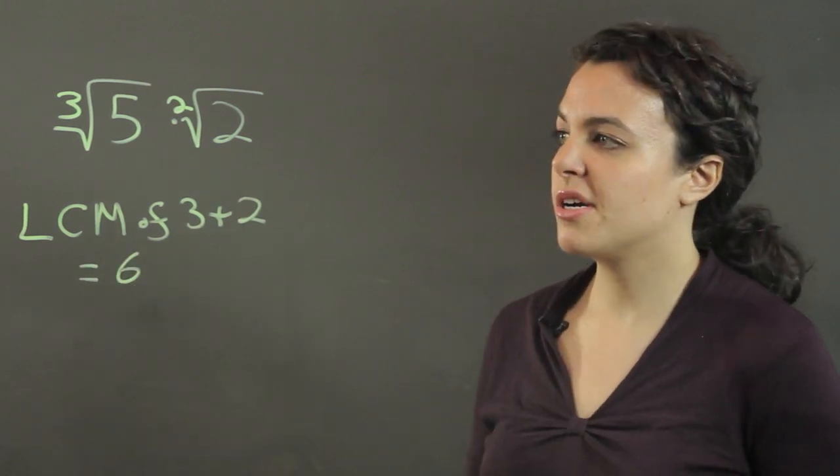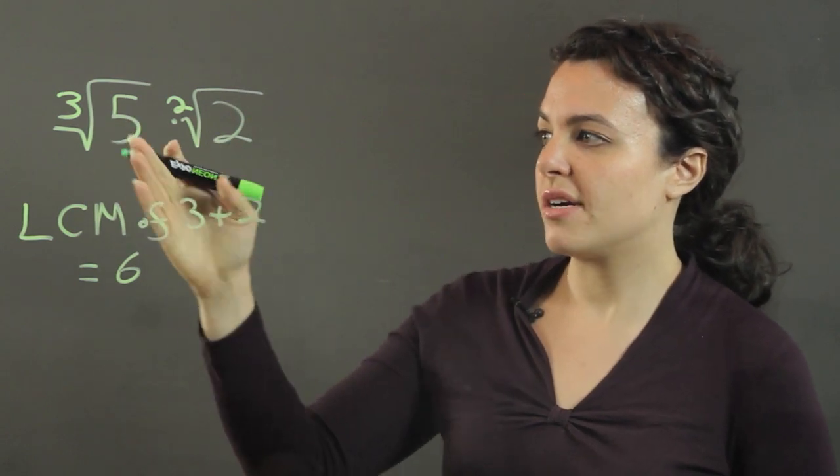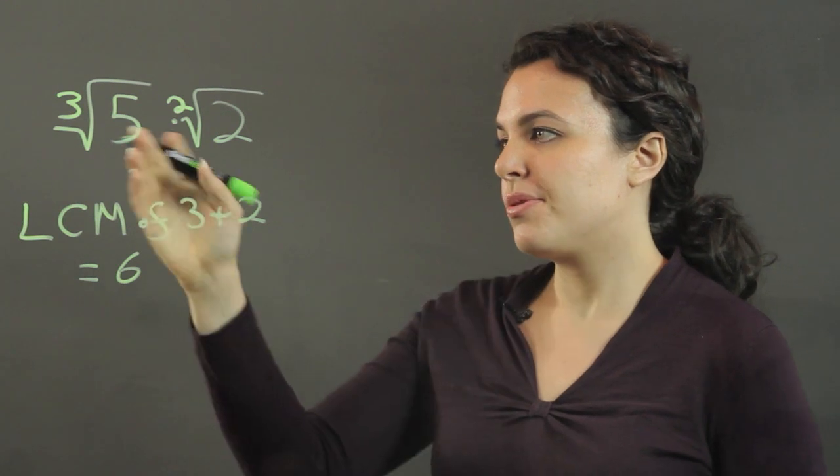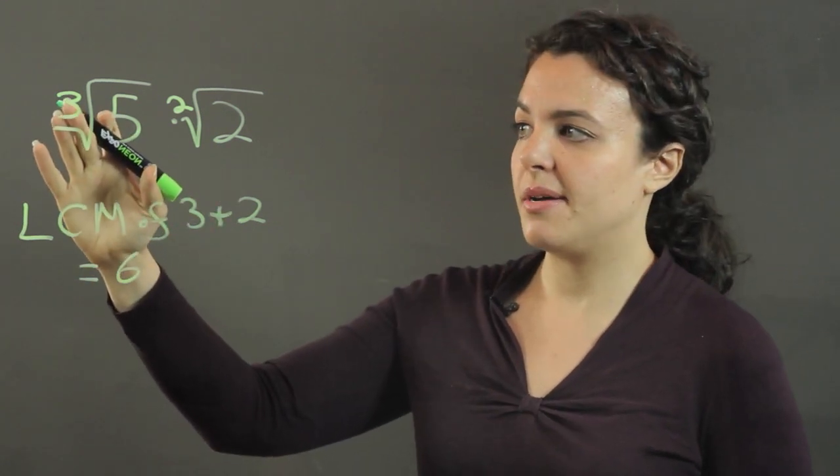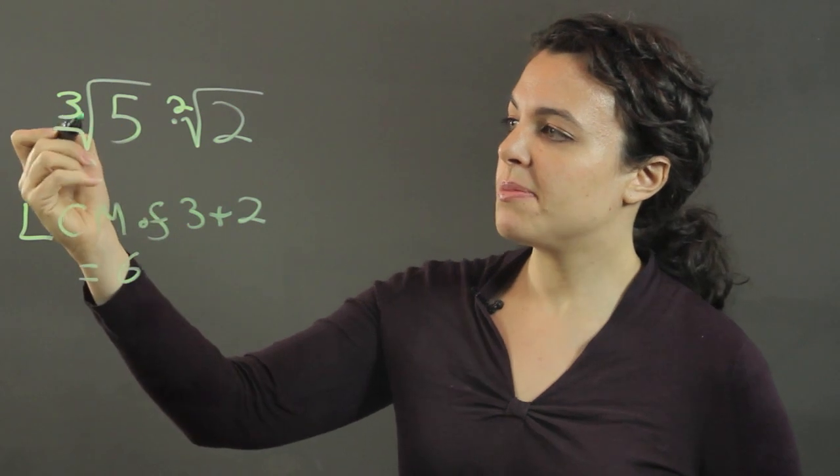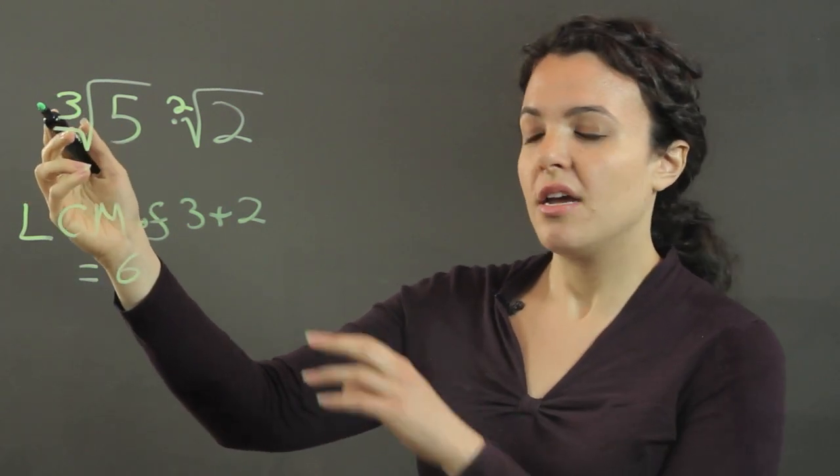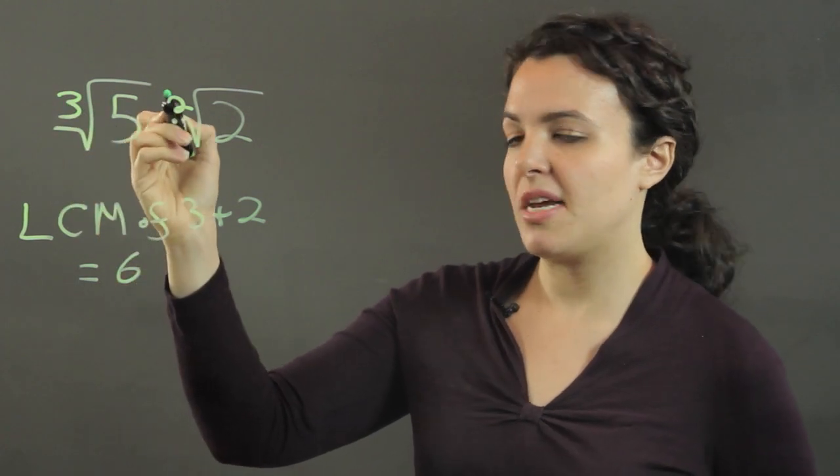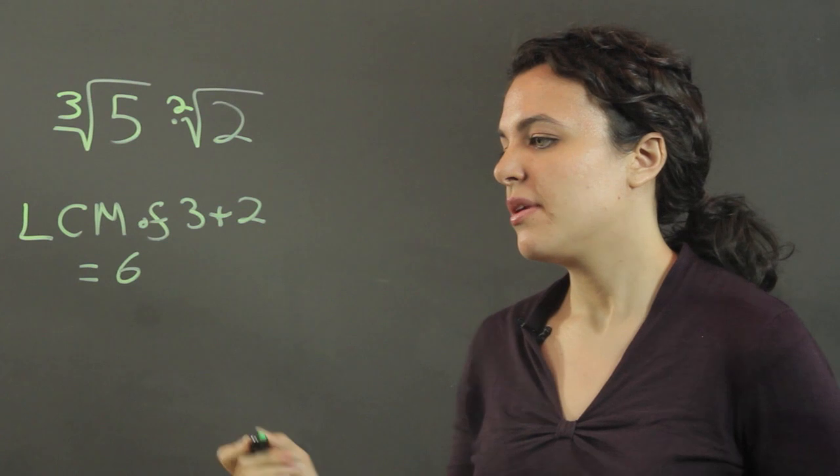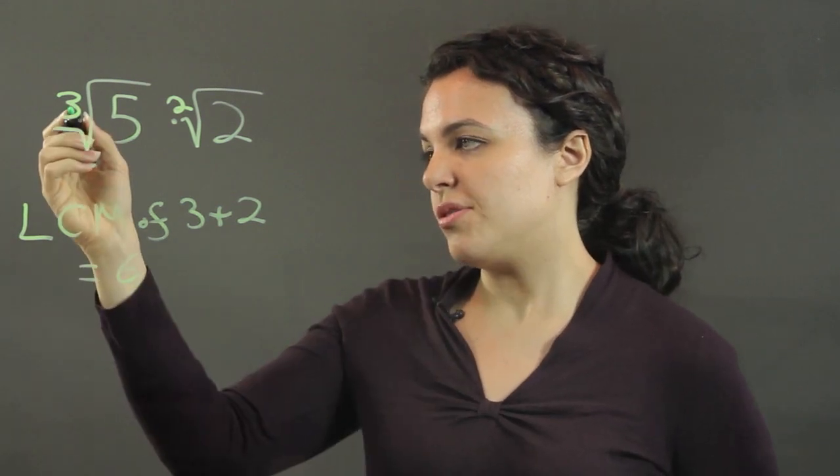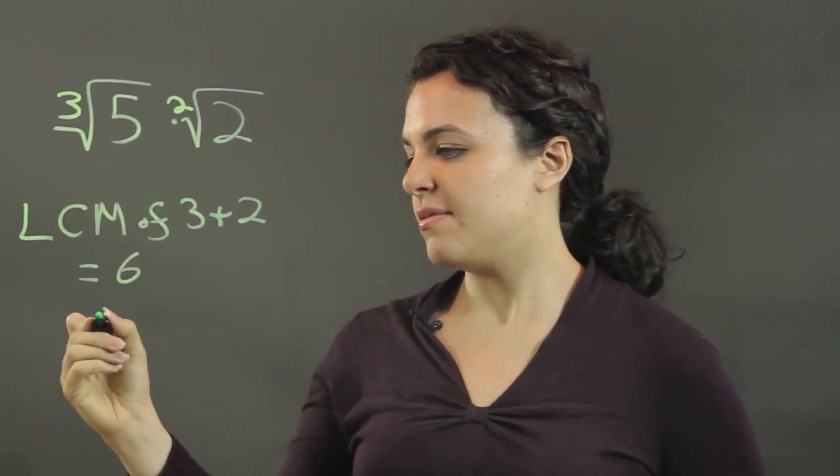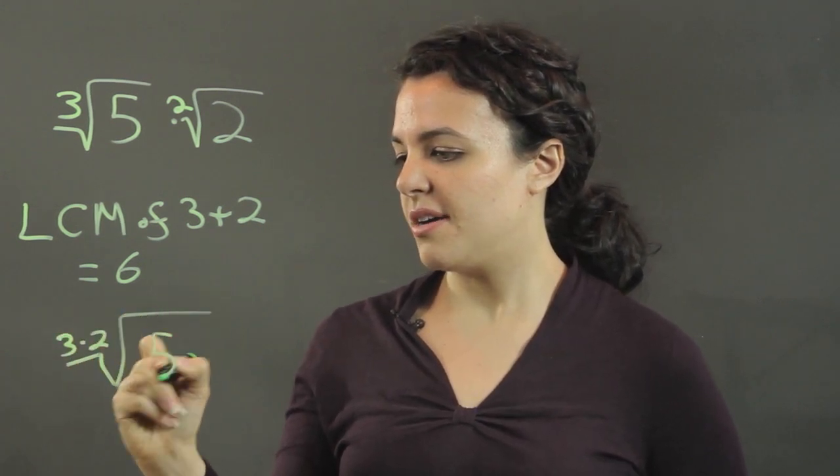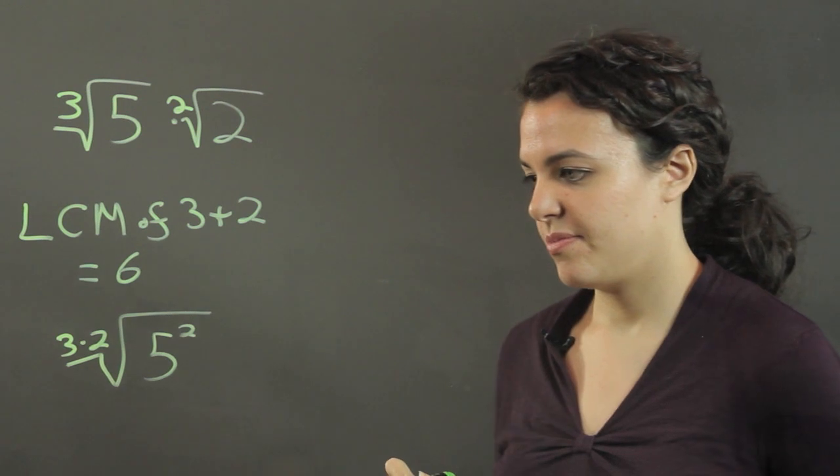So we want to convert these into radicals with an index of 6. So to go from 3 to 6 here, we have to multiply by 2. And when we multiply the index by 2, we can offset that by raising this to the same power that we've multiplied this by. Meaning, our 3 root 5 becomes 3 times 2, 5 to the power of 2.